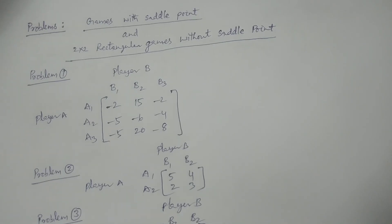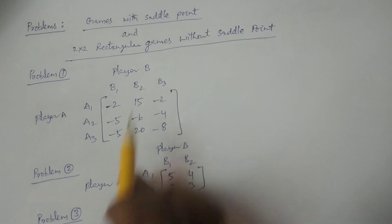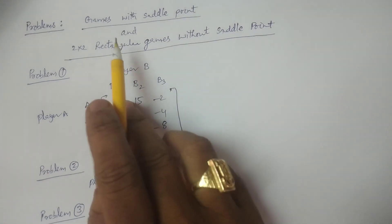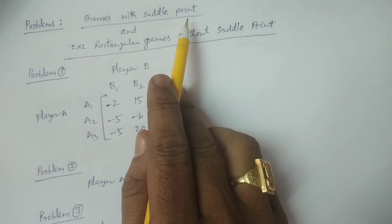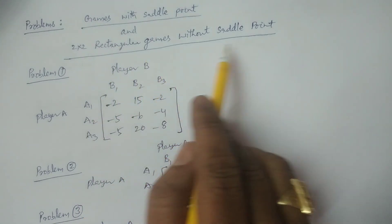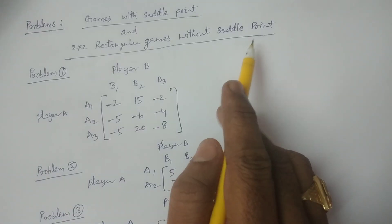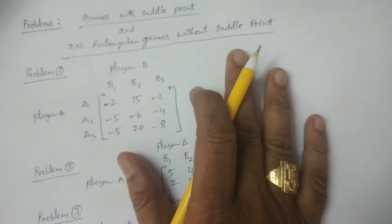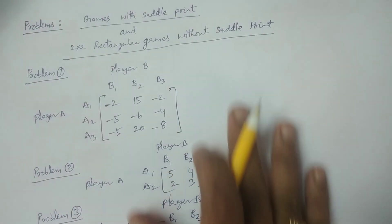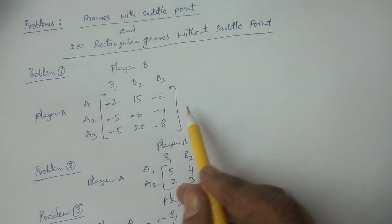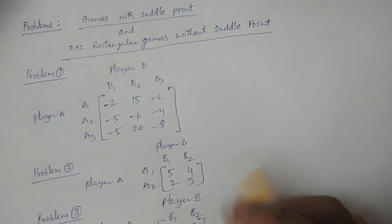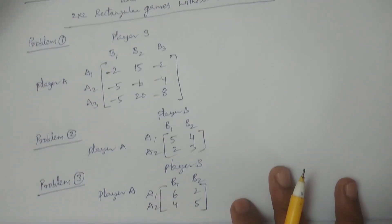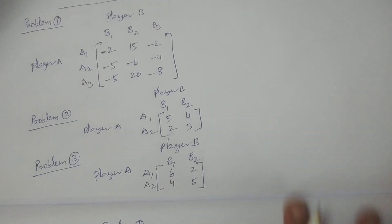Welcome to BSC Statistics students. In this class I explain problems in games with saddle point and 2 by 2 rectangular games without saddle point. That is an example. I will tell you some particular problems — three problems I have noted here, I explain one by one.